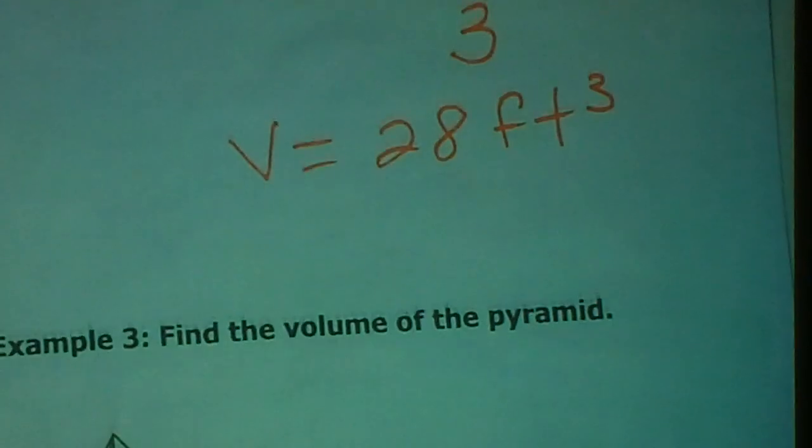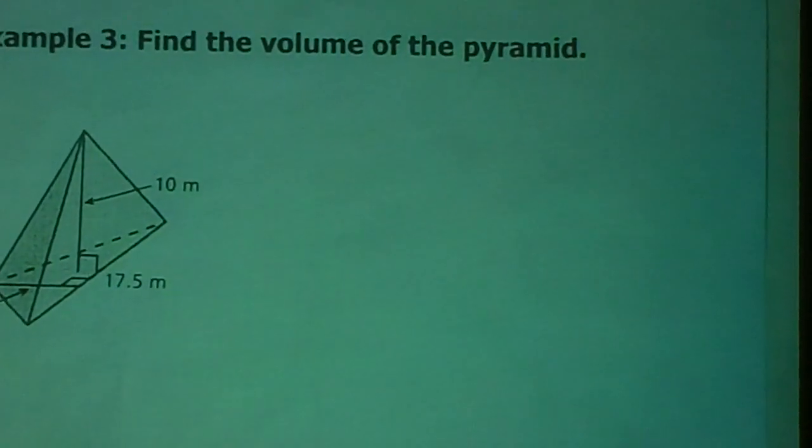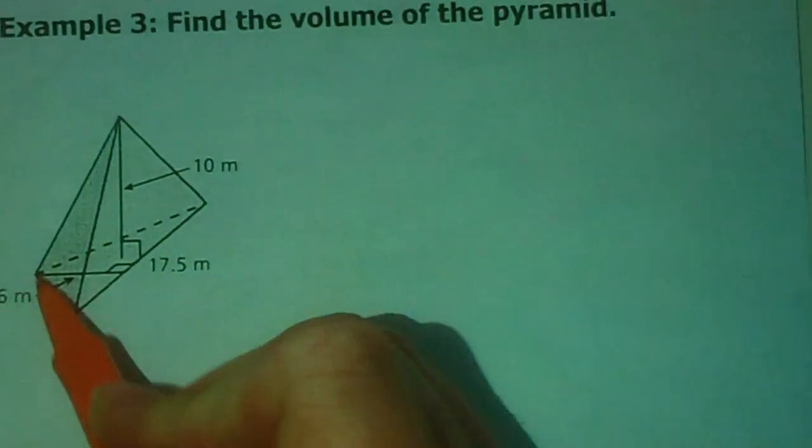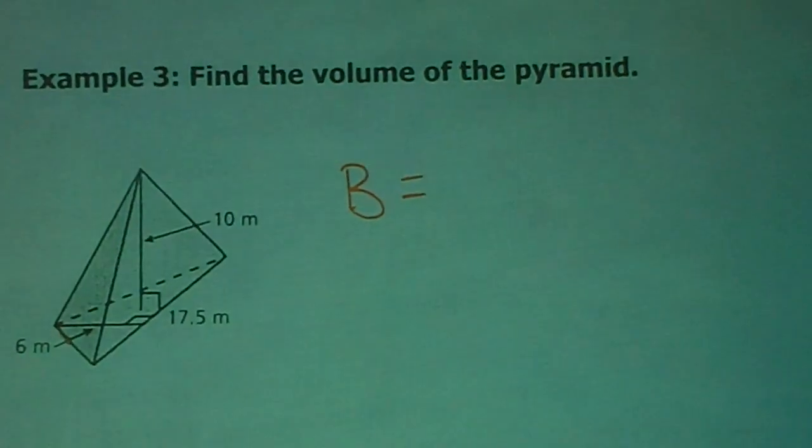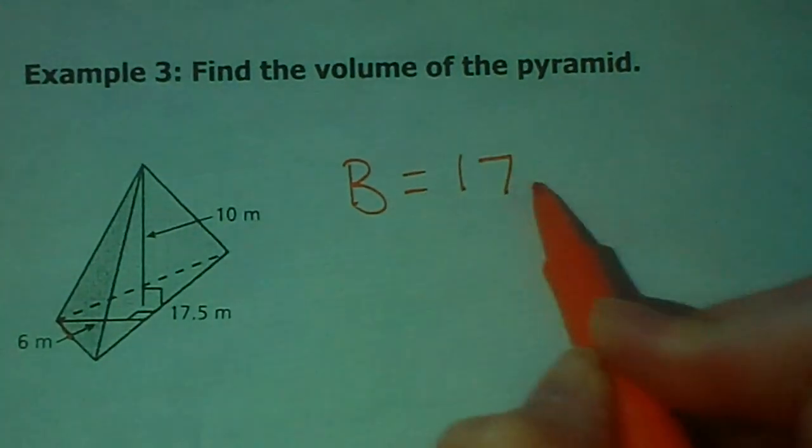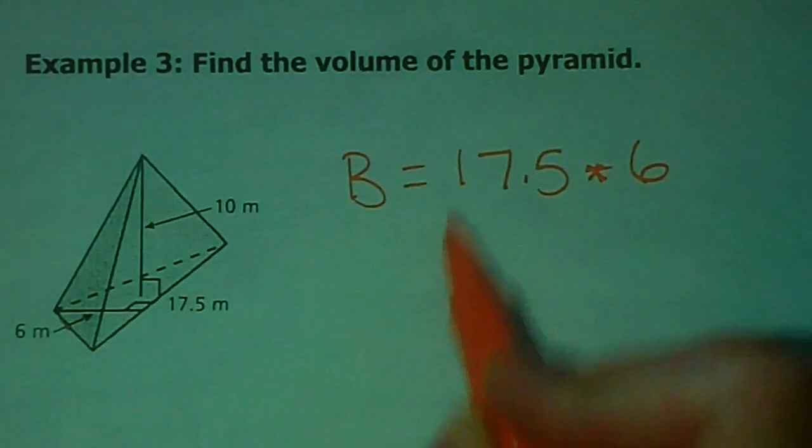All right, example number 3. I know you're on the edge of your seat. I'm going to move the oatmeal out of the way. Notice we have a triangular pyramid here. So, our base is this triangle right here, and the area of a triangle, remember, is the base times height divided by 2. So, I'm going to take 17.5 times 6, divide that by 2. When I punch all that in, I get 52.5.